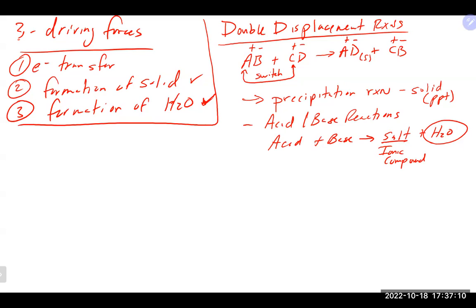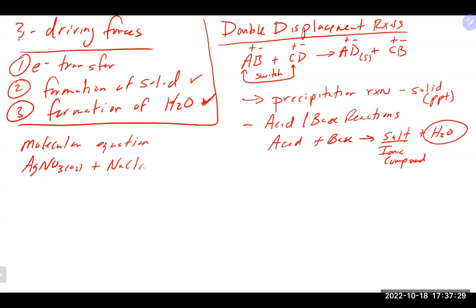We also talked about three types of equations you could write for these reactions: the molecular equation, the total ionic equation, and the net ionic equation. An example of a molecular equation: silver nitrate plus sodium chloride makes silver chloride — which is a solid — and sodium nitrate.